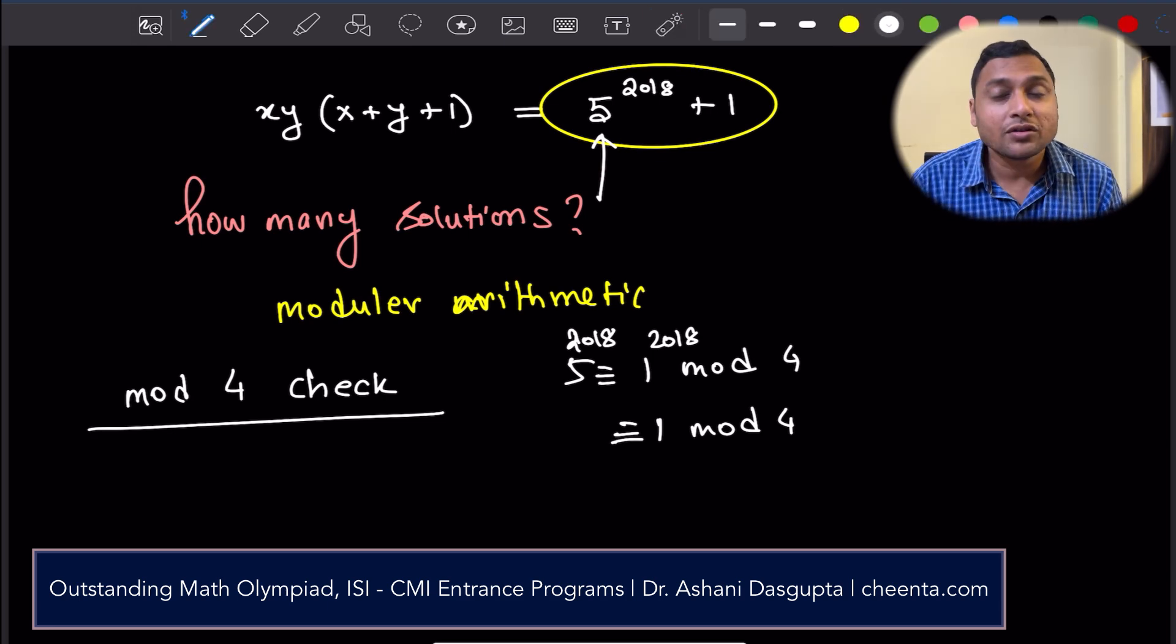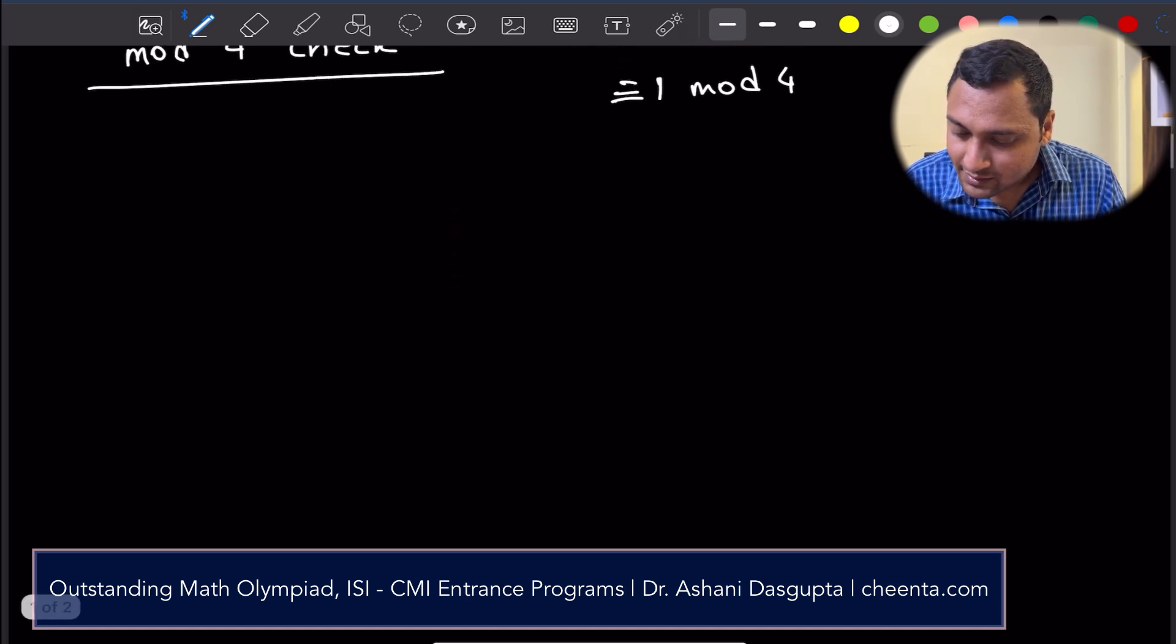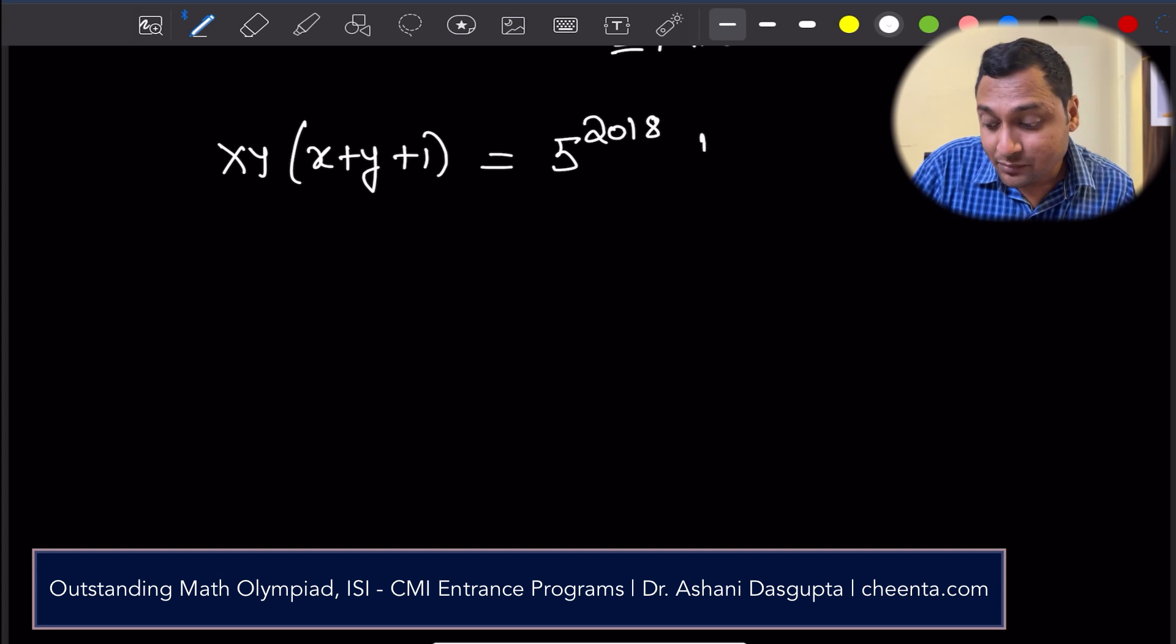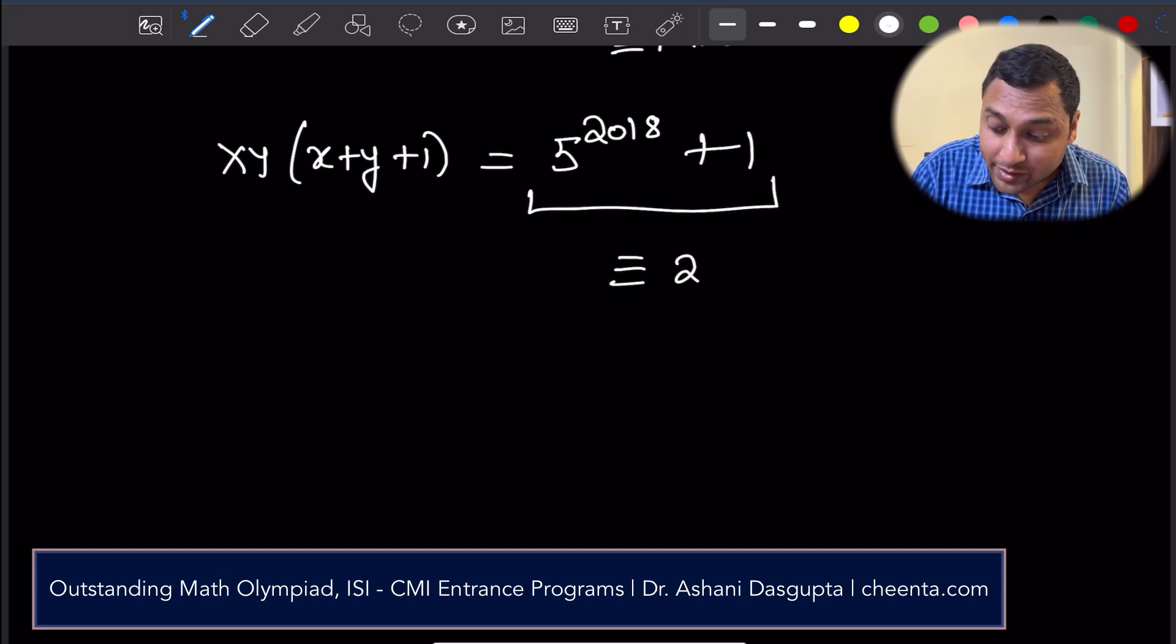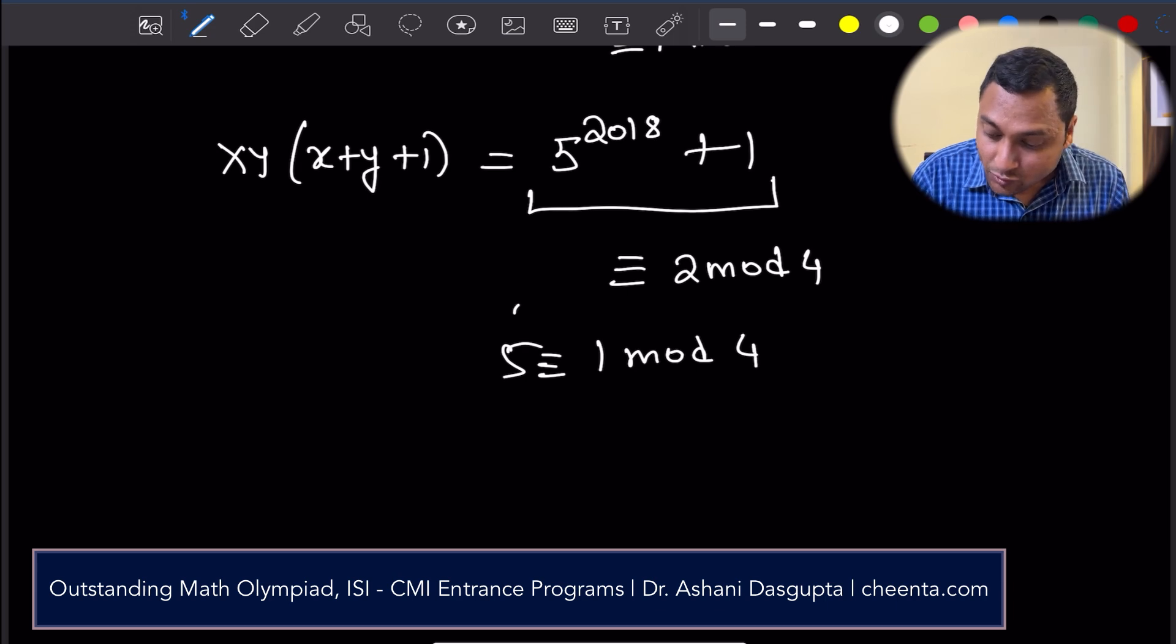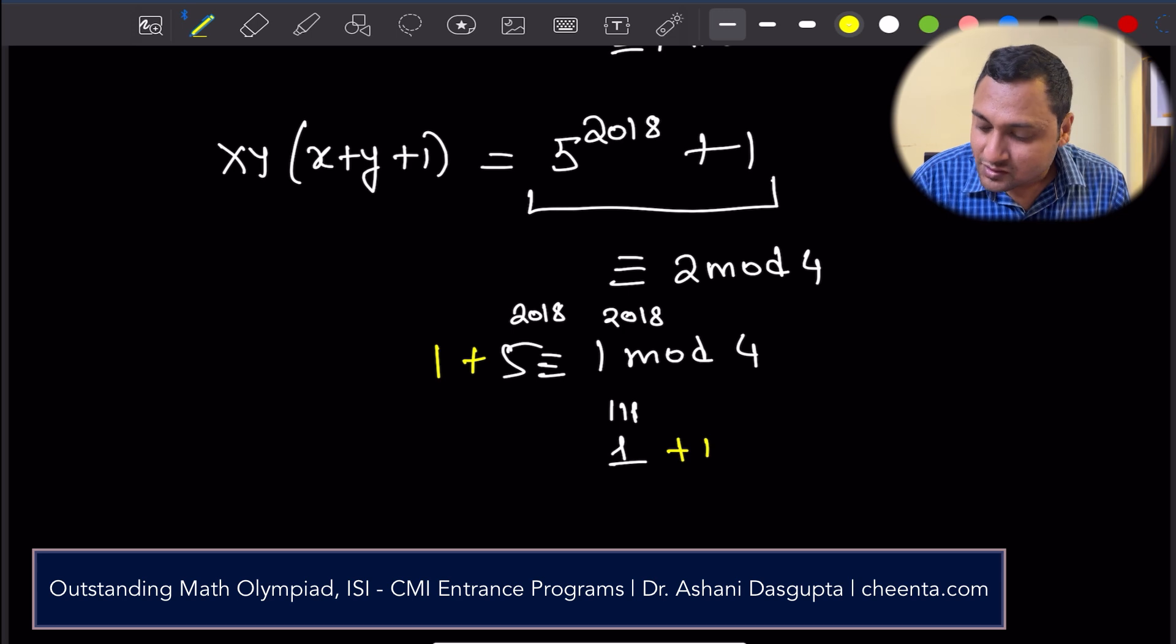Really, the options are modular 3, modular 4, modular 5. These are the obvious choices because if you do that, then the right-hand side becomes much simpler. So, we will do it with modular 4. Let's write this down carefully. xy times x plus y plus 1 equals 5 to the power 2018 plus 1. The modular 4, the right-hand side is congruent to 2 mod 4 because 5 is congruent to 1 mod 4. And you can raise both sides to the power of 2018. So, that's just 1. And then you can add 1 to both sides. So, you get 2 mod 4.